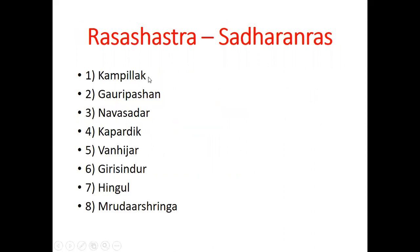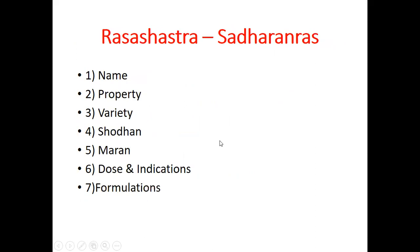These are the 8 Saadharana Rasa. You must remember these names — they will be asked in the SAQ and also for your viva: Kampillak, Gauri Paashana, Navasadhar, Kapardik, Vannijar, Girisindur, Hingul, and Mruddhaarashrunga.